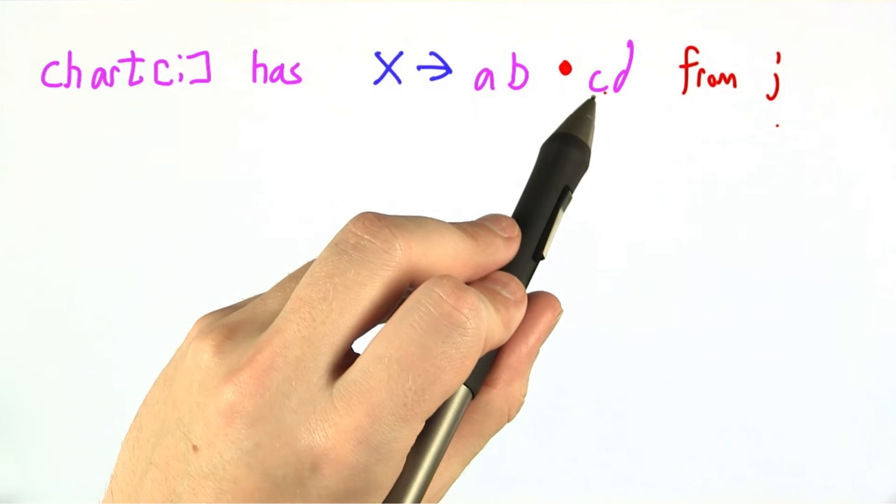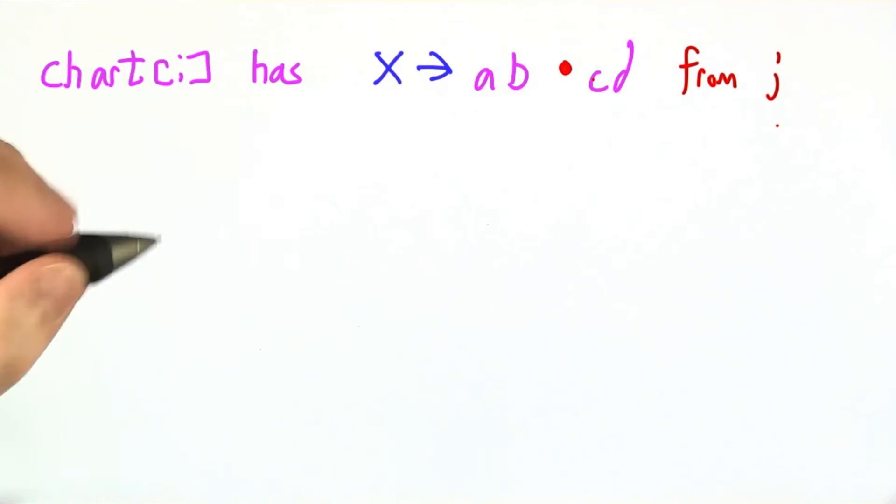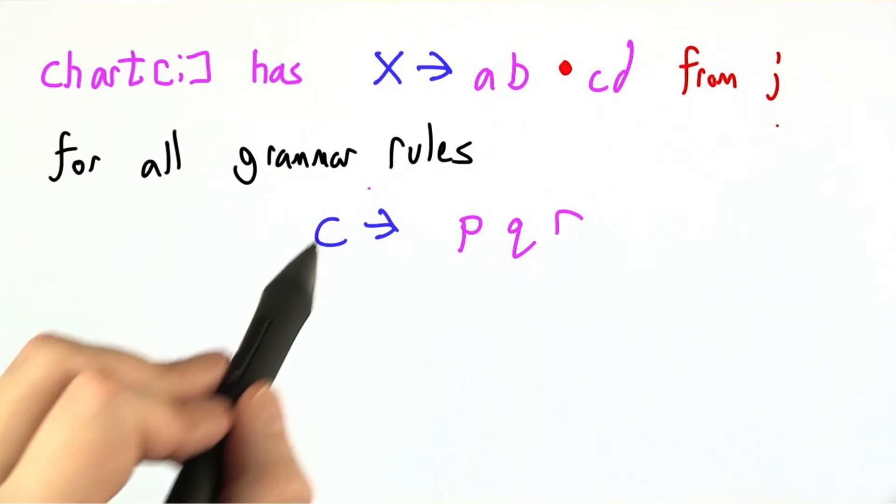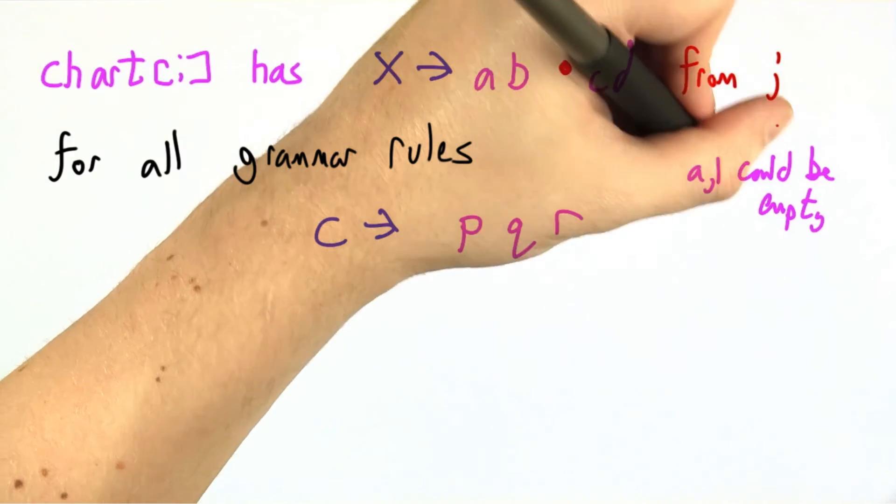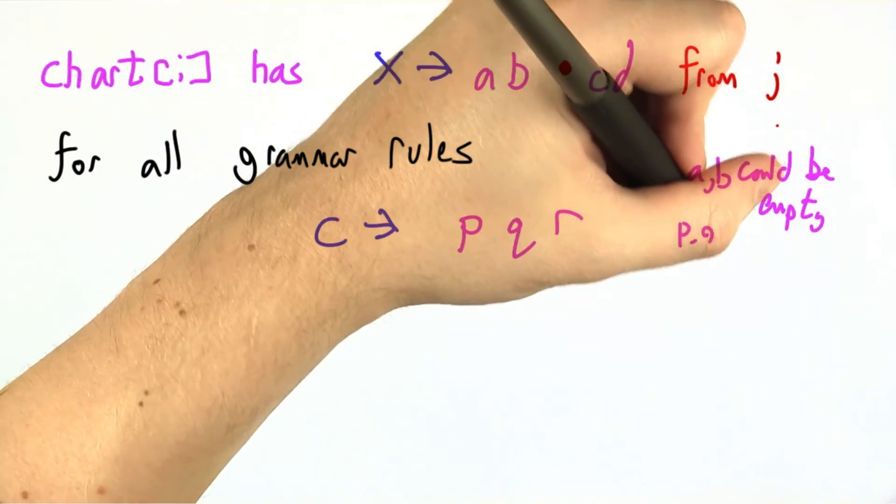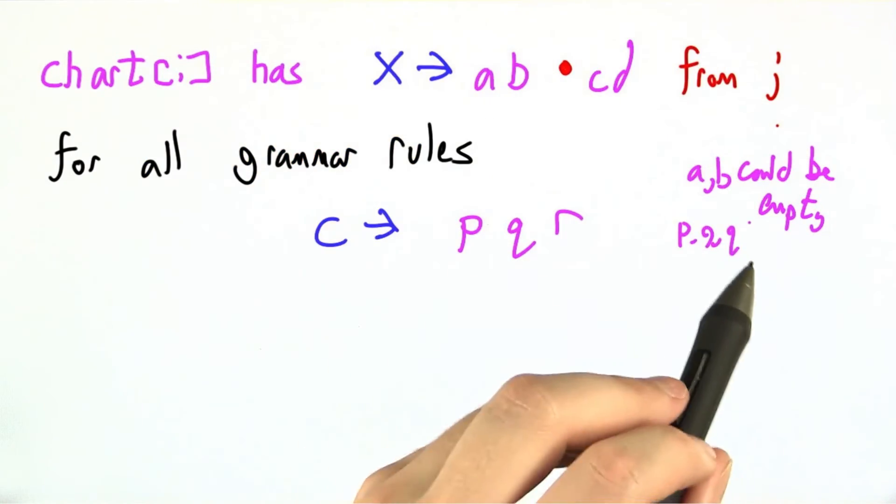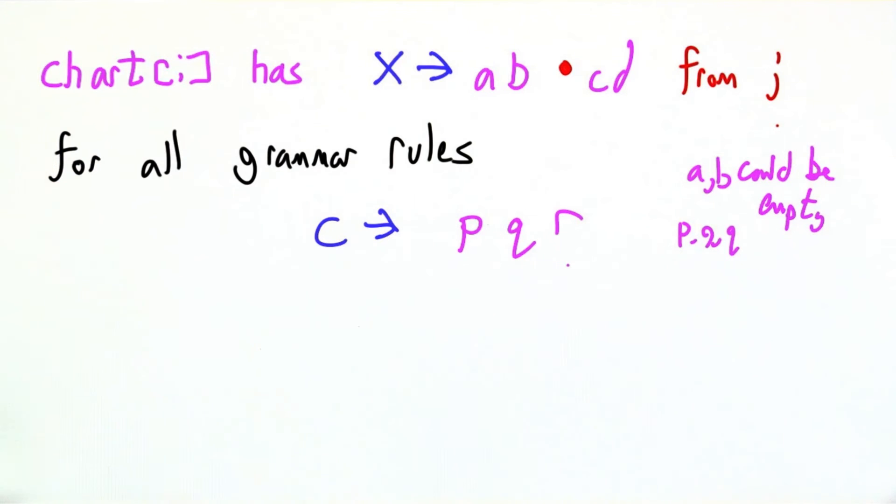But I do note that our dot is right in front of C. So I'm going to look in my grammar for all rules C goes to something. A could be empty. B could be empty. PQR could be empty. Or they could be terminals or they could be non-terminals. Could be anything.